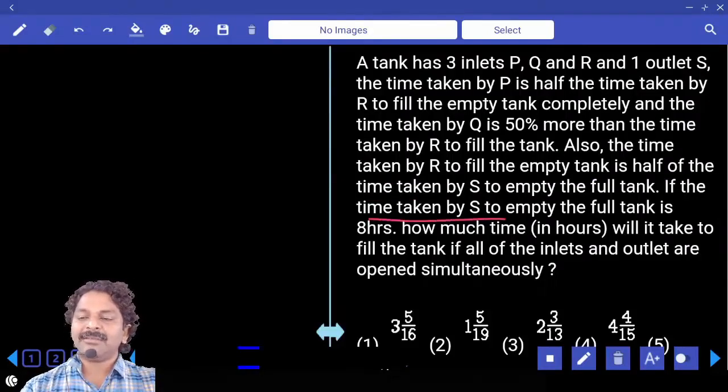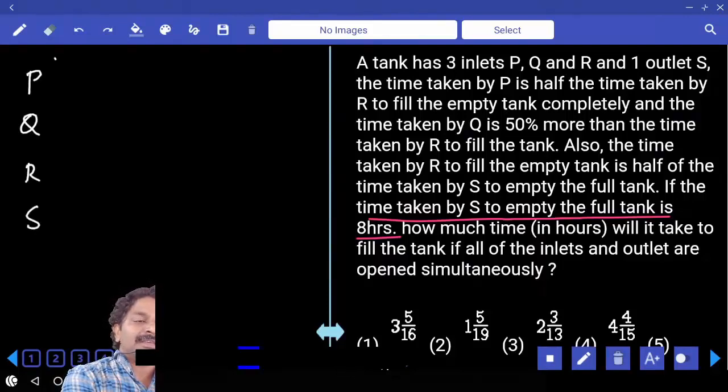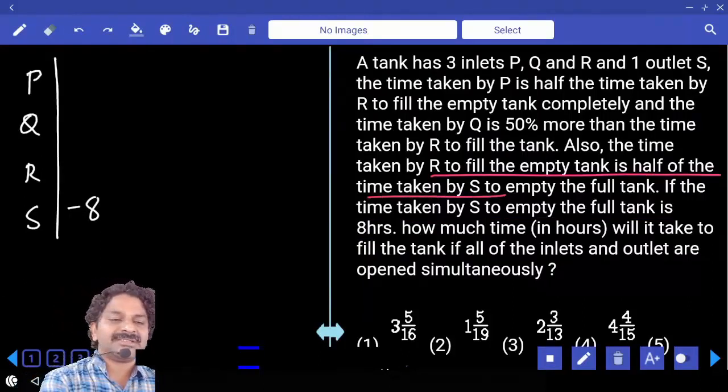The time taken by S to empty the full tank is 8 hours. So now we have P, Q, R, S. S can empty the tank in 8 hours. Just before that, time taken by R is half the time taken by S.